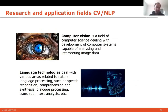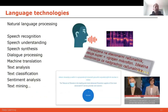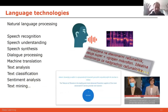Computer vision is dealing with images — interpretation and analysis of images — while language technologies deal with everything related to language: from speech recognition to speech understanding, speech synthesis, dialogue processing, machine translation, text analysis, classification, sentiment analysis, text mining, and so on. Natural language processing is an umbrella term that encompasses many of those expressions in a wider sense. I'll present a couple of examples from this area, but mostly I will focus on computer vision.